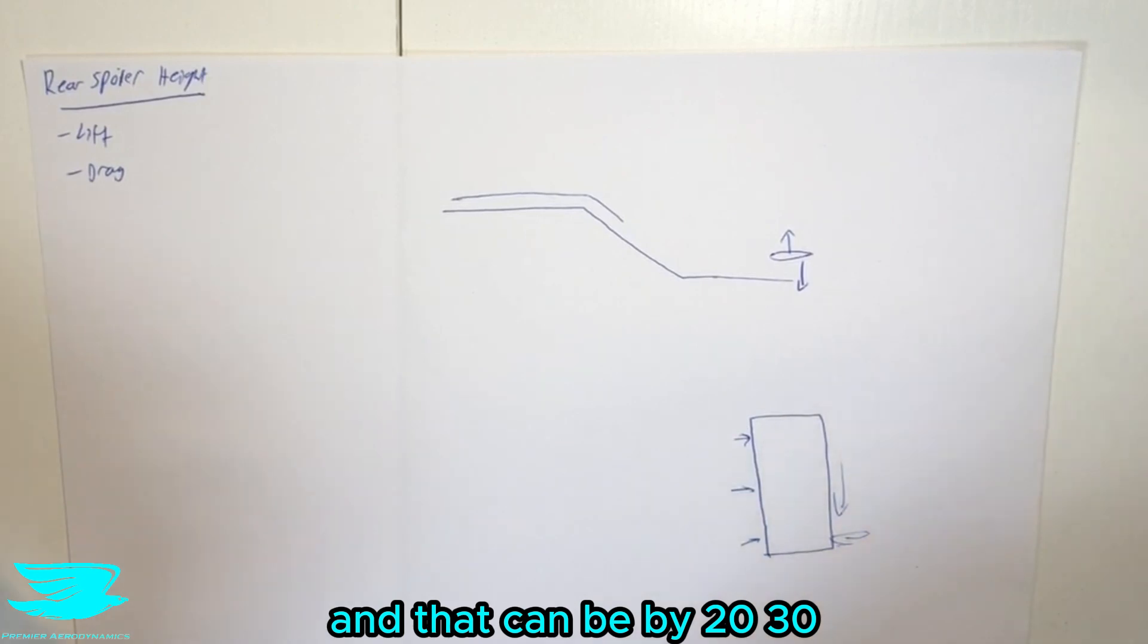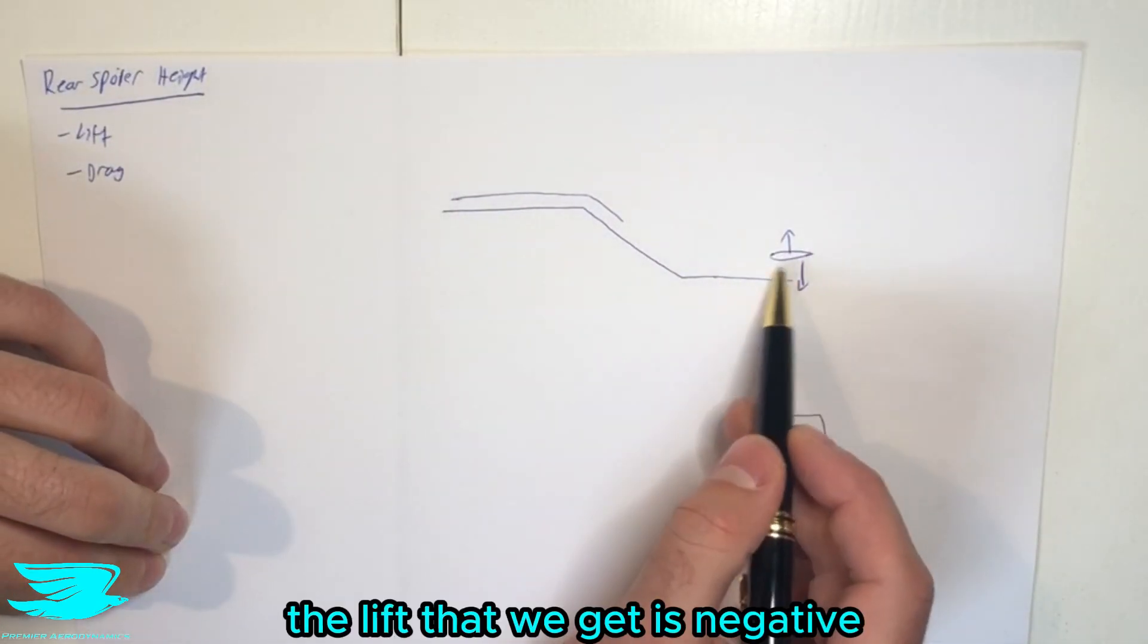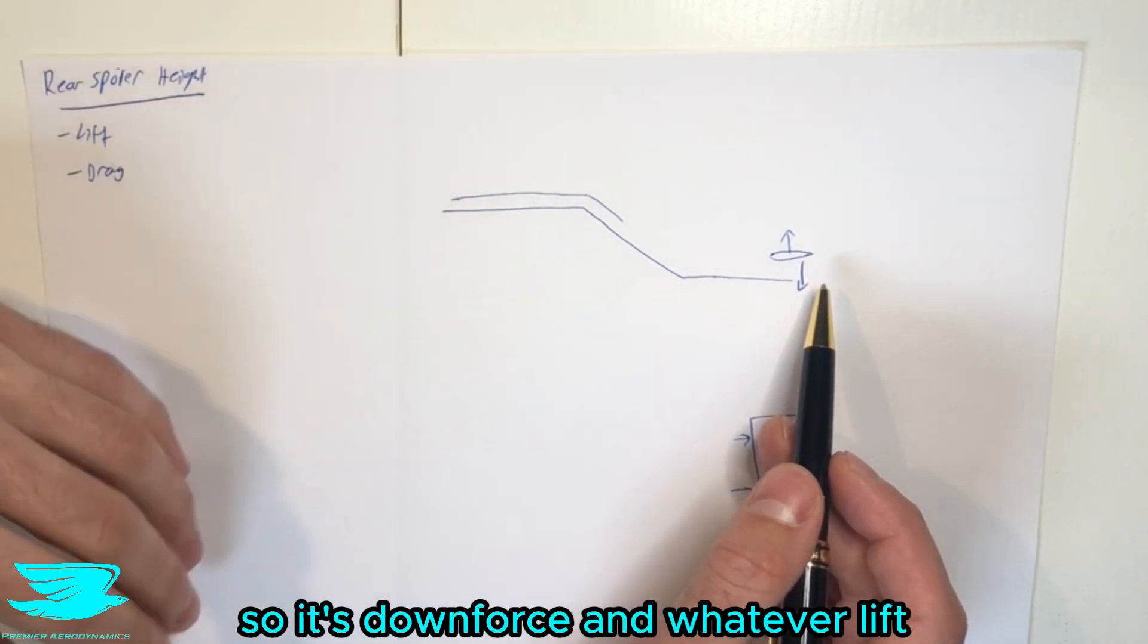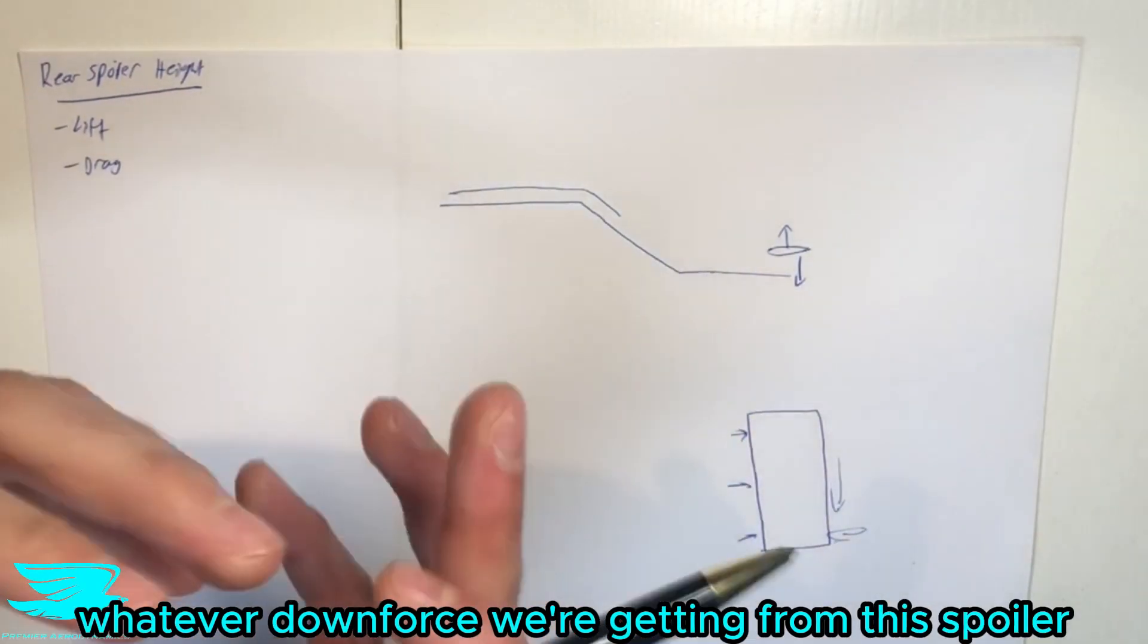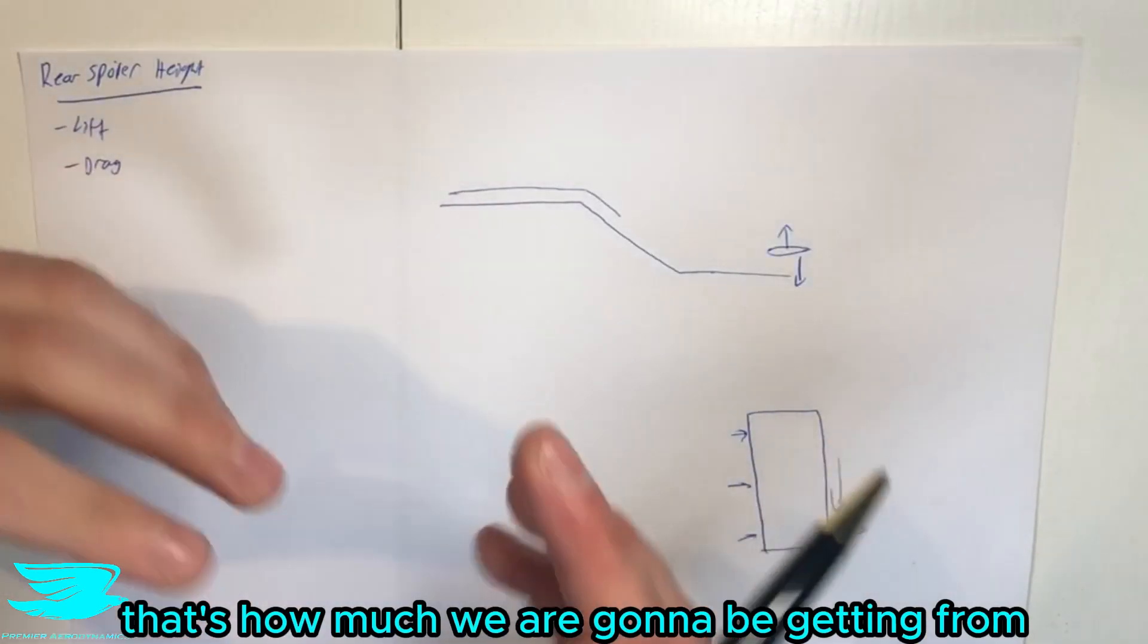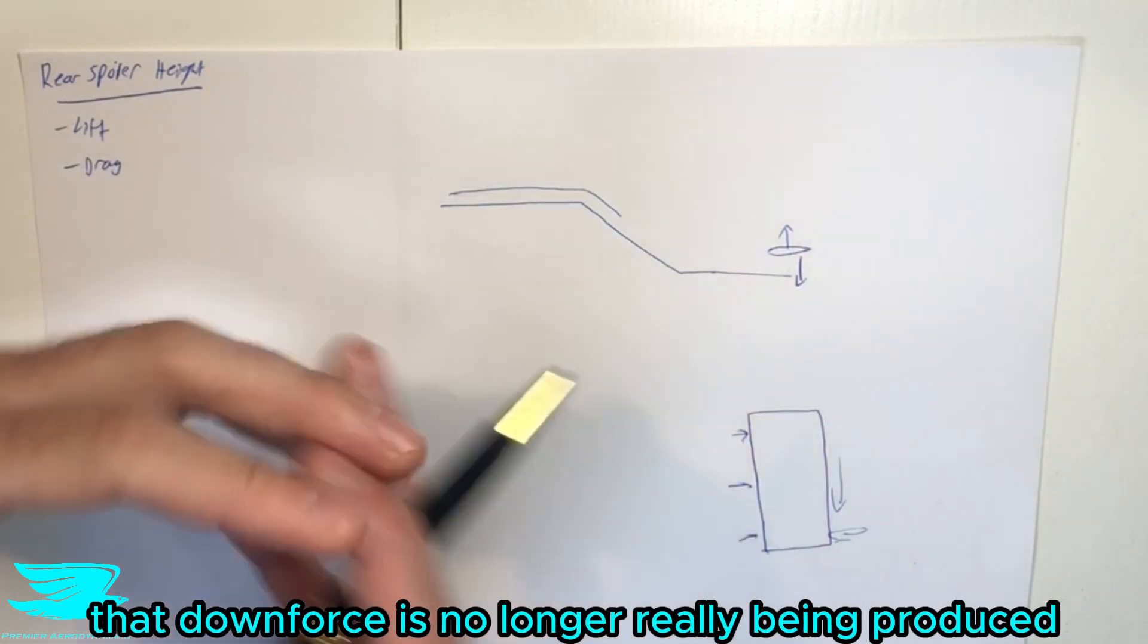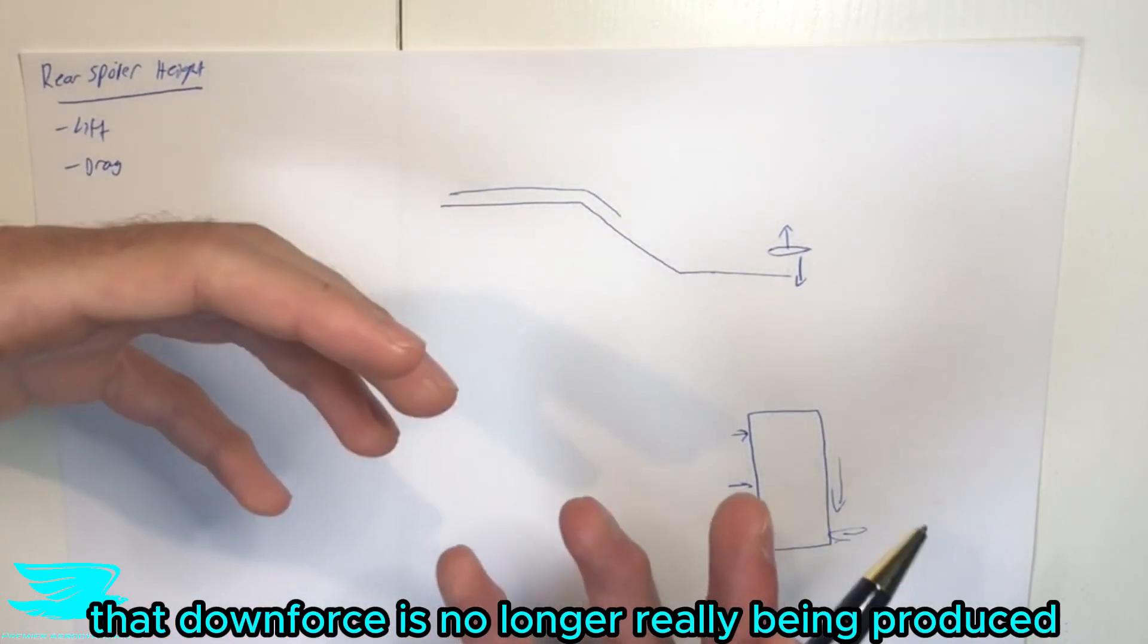And that can be by 20, 30, 50 counts, whatever. And likewise, if we move it up, the lift that we get is negative, so it's downforce, and whatever downforce we're getting from this spoiler to begin with, whether that's like 70 counts, 100 counts, whatever, that's how much we are going to be getting from it, as opposed to if we put it down near the boot, that downforce will no longer really be produced.